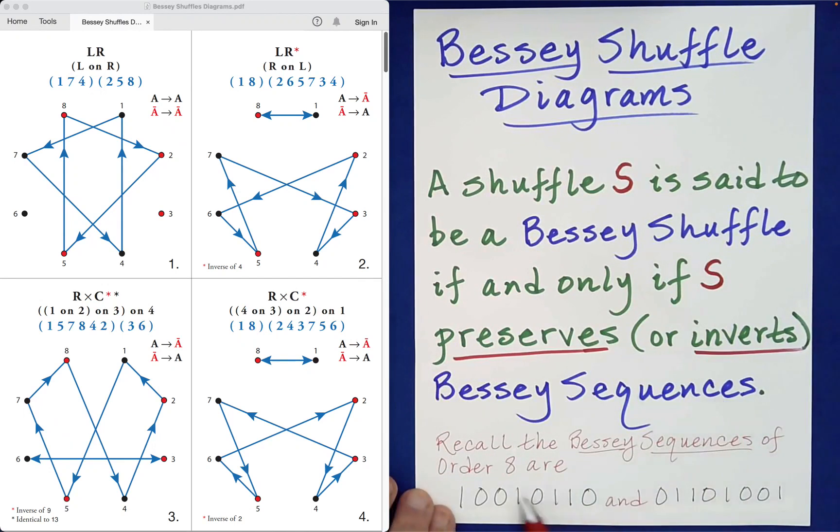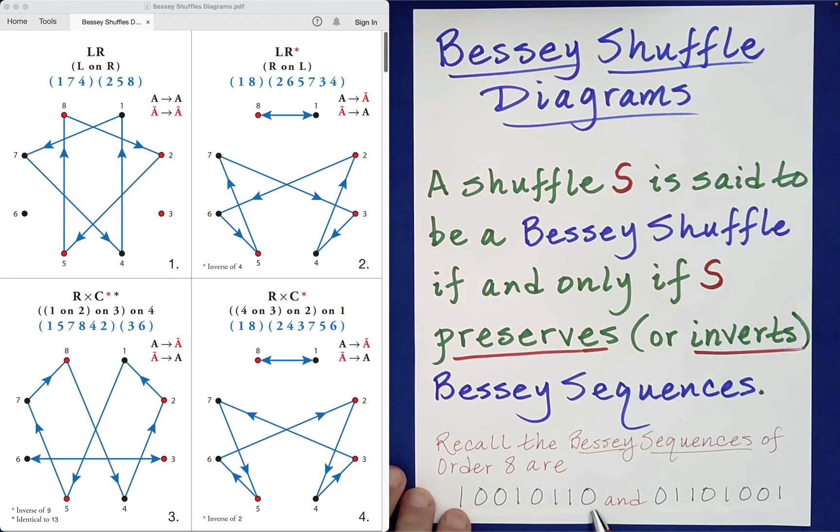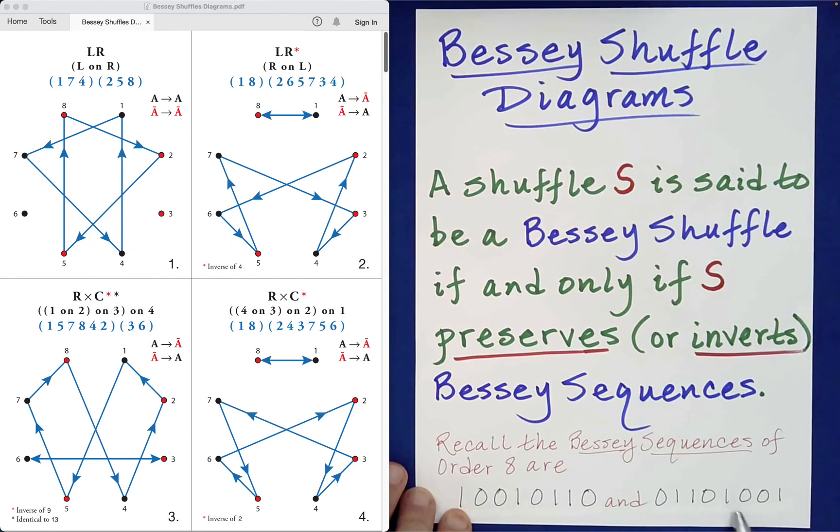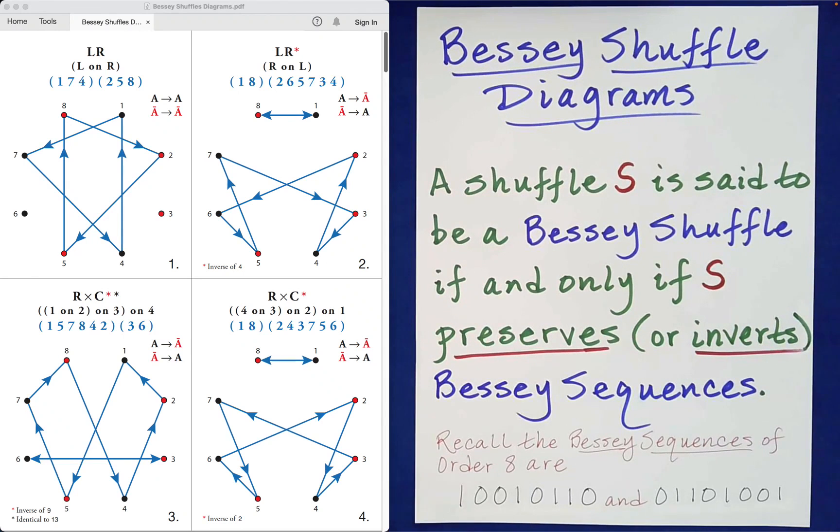Recall the Bessey sequences of order 8 are the following: 1 0 0 1 0 1 1 0, and its inversion: 0 1 1 0 1 0 0 1. Those are the only two Bessey sequences of order 8, and we say that they are the inversion of one another.